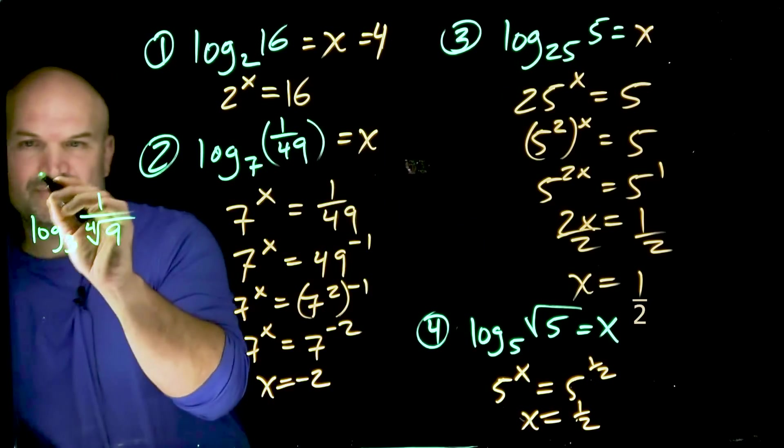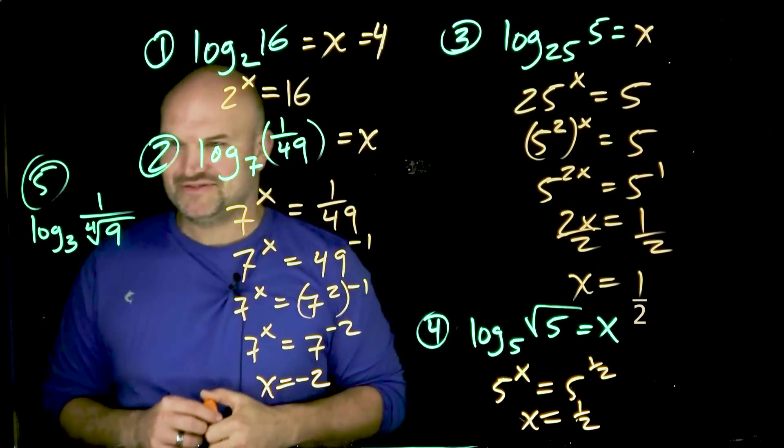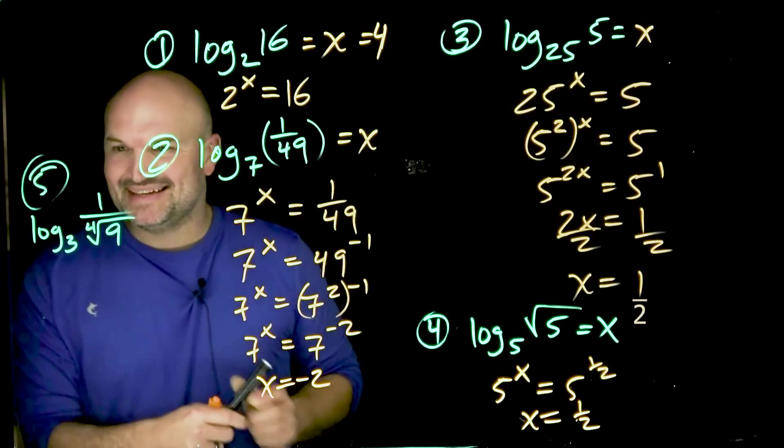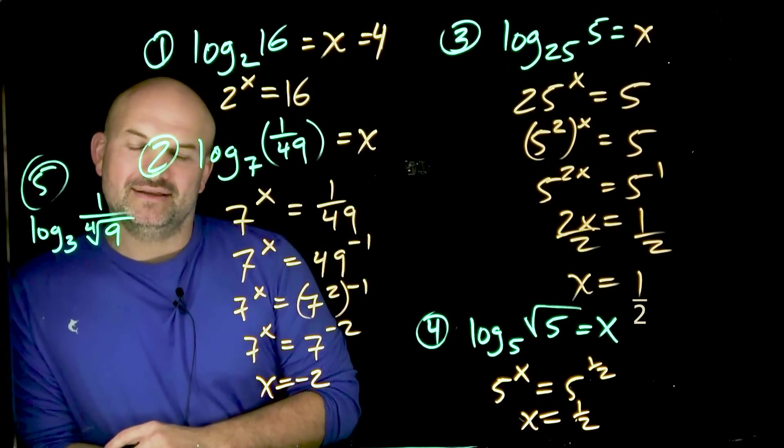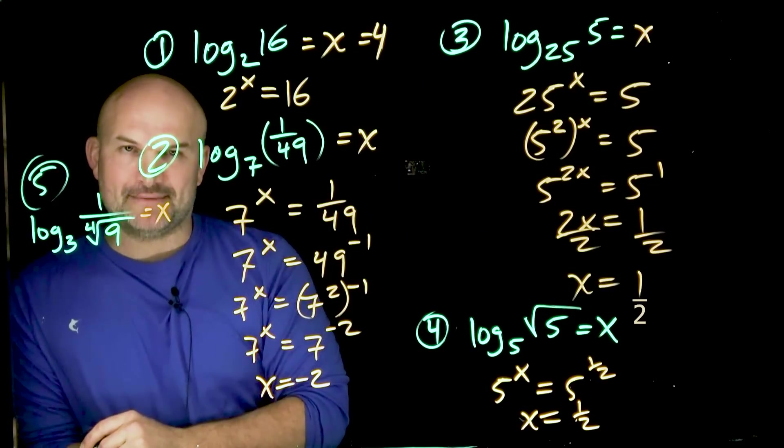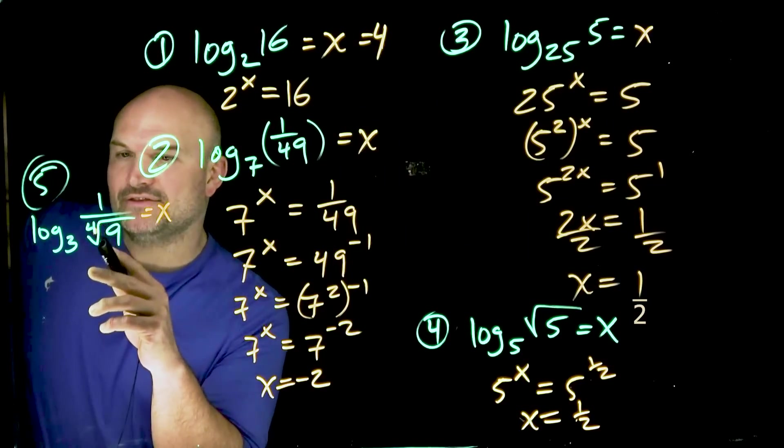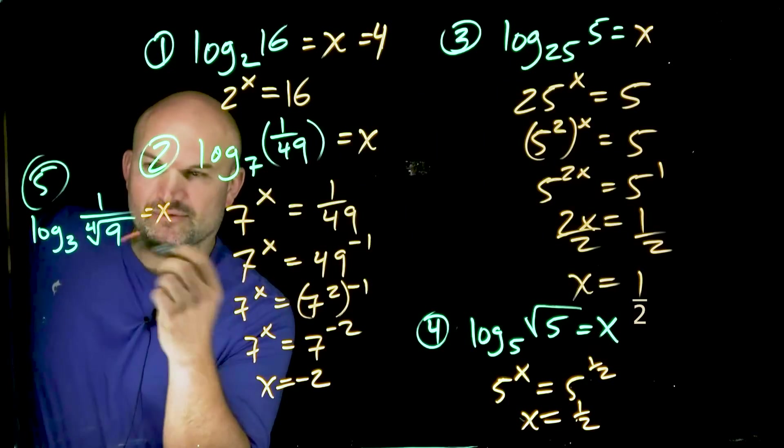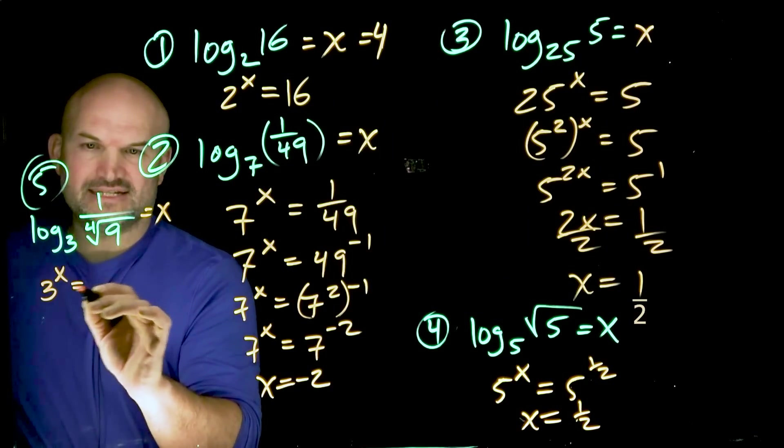So this is number five. Sorry guys, I ran out of space. I did a really poor job of planning out this video. So we have log base 3 of 1 over the fourth root of 9, and that would be equal to x. So let's rewrite these as our rational powers. A couple of things I'm going to do though: rather than rewriting the fourth root, I'm going to rewrite that as 1/4. So I can do 3 to the x equals, now if I want to put this in the numerator, that's going to be a negative 1/4.